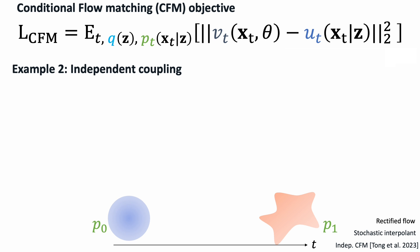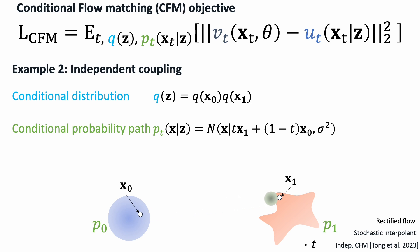This is great, let's look at several other designs. Here, instead of conditioning only on the data point x1, we also sample a noise x0 from the base distribution. The conditional probability path can be a Gaussian distribution with a small variance that moves between x0 and x1. The conditional vector field is constant over time on this path. These independent coupling conditions lead to methods like rectified flow and stochastic interpolant.